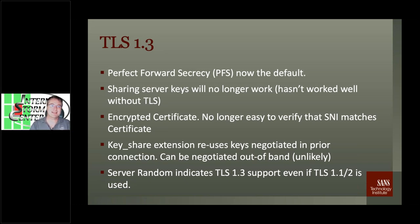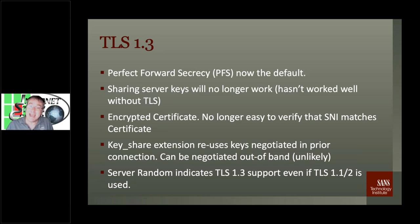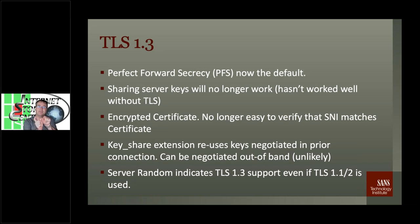One important thing that changed in TLS 1.3 is that your certificates are now encrypted. This takes away an important bit of intelligence we can collect from TLS. In particular, one thing I like to look at is: do any users click OK on bad certificates? If I have the certificate and the Server Name Indicator, I can check whether that hostname was actually part of the certificate. Zeek, for example, will flag that automatically for you. With encrypted certificates you can't really do that anymore, which makes it more difficult.